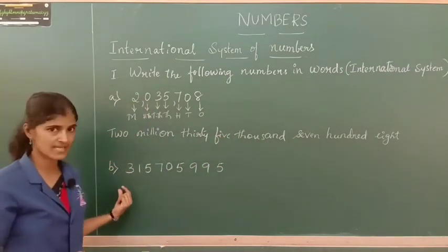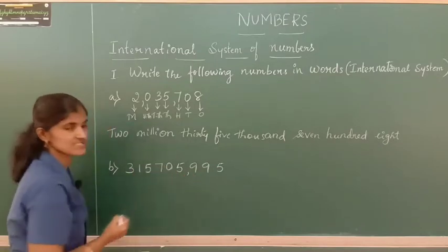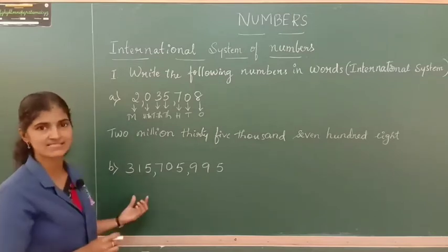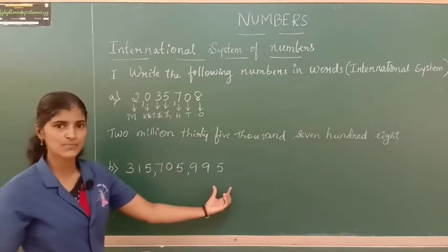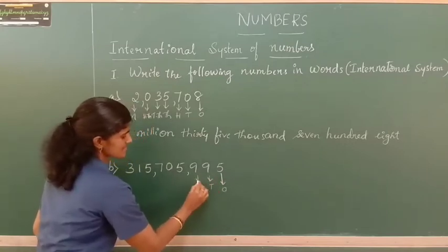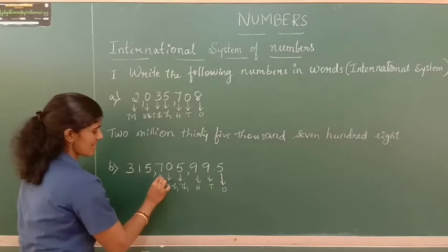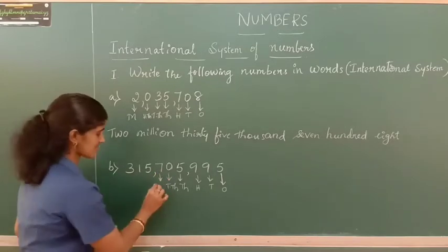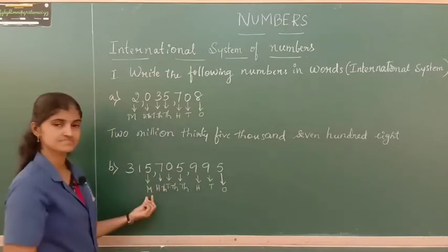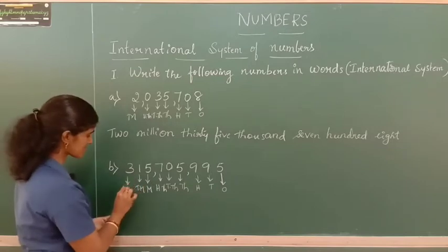Let us go with the second question. Starting from the right side, group of three digits, first comma, then group of three digits, next comma, then the last three digits. Writing the place values: ones, tens, hundreds, thousands, ten thousands, hundred thousands, then million, ten million, and hundred million.